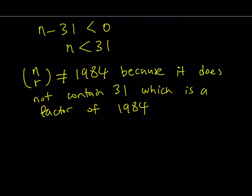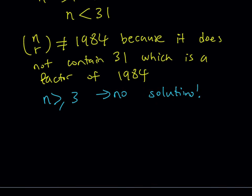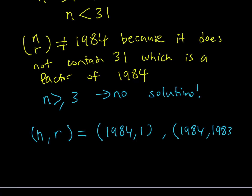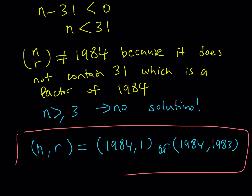To summarize: we don't have any solutions for r greater than or equal to 3, which means we end up with two solutions to this equation. The solutions are (n, r) = (1984, 1), since n equals 1984 works for r equals 1, and also (n, r) = (1984, 1983) because these two quantities are equal by symmetry. This brings us to the end of this video. Sorry for the length — we had to talk about different things. I hope you enjoyed it. Thank you for watching. I'll see you tomorrow with another video. Until then, be safe. Take care. Bye-bye.